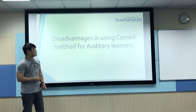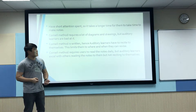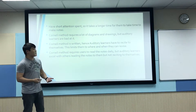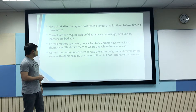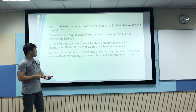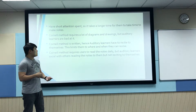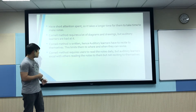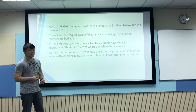The disadvantages of using Cornell method for auditory learners are that they have a short attention span, so it takes longer time for them to make Cornell notes. Cornell method requires a lot of diagrams and drawings, but auditory learners are bad at it. Cornell method is written, hence auditory learners have to recite to themselves, which limits them to where and when they can revise. Cornell method requires users to read the notes daily, but auditory learners excel with others reading it to them.